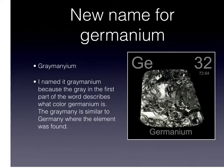My new name for Germanium is Gray Manium. I named it Gray Manium because the gray in the first part of the word describes what color Germanium is, and the Gray Manium is similar to Germany, where the element was found.